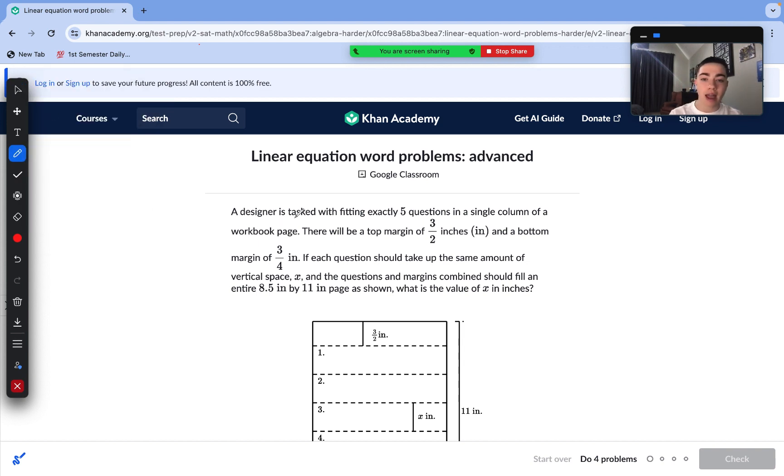A designer is tasked with fitting exactly five questions in a single column of a workbook page. There will be a top margin of three and a half inches, and a bottom margin of three quarter inches. If each question should take up the same amount of vertical space, and the questions and margins combined fill an 8.5 by 11 inch page as shown, what is the value of x in inches?